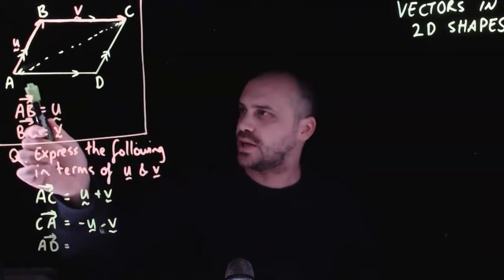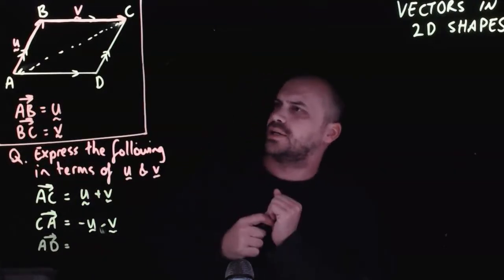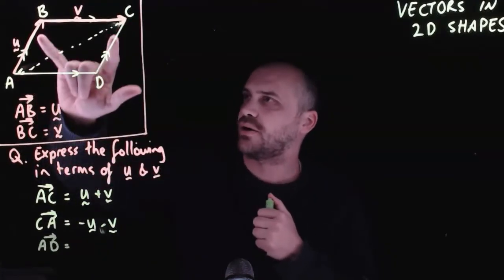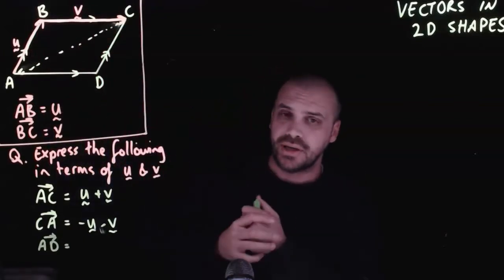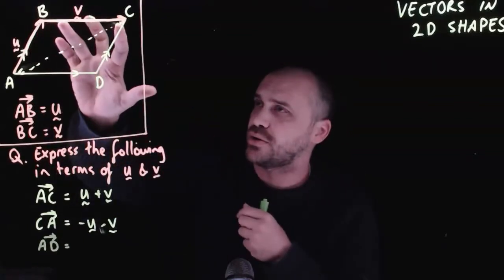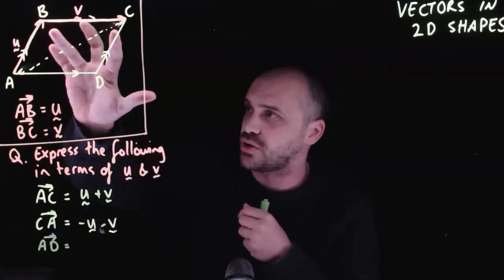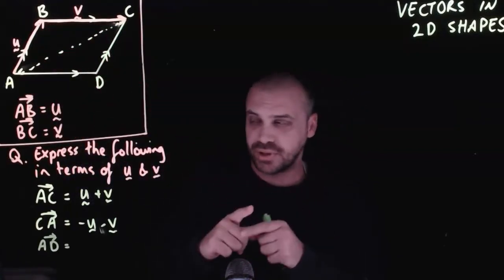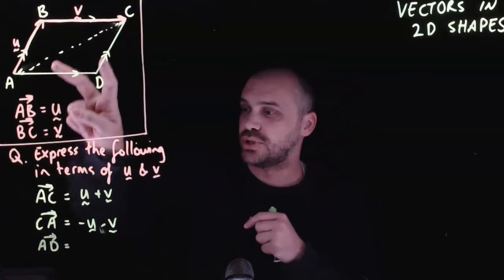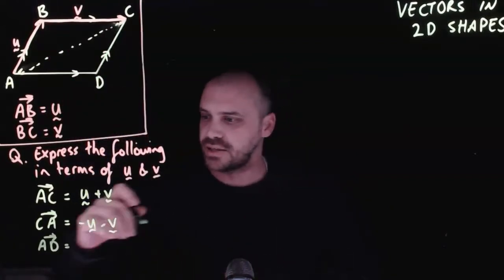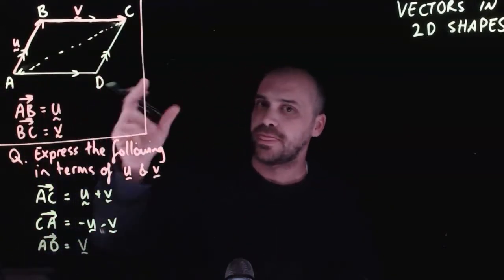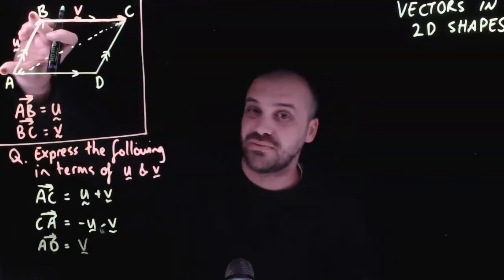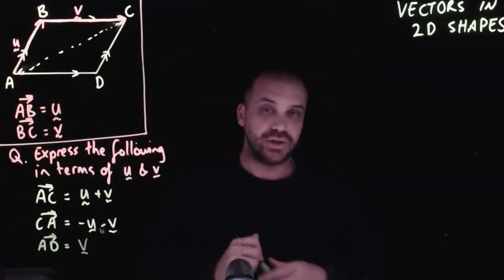Now, what about vector AD? Well, these two vectors are parallel. BC and AD are parallel. And they're in a parallelogram. We know that parallelograms have sides that are the same length. So if they're moving in the same direction, and they have the same length, they are equal to each other. So vector AD is simply going to be vector V. And similarly, vector DC would be the same as vector AB. That would also be U.